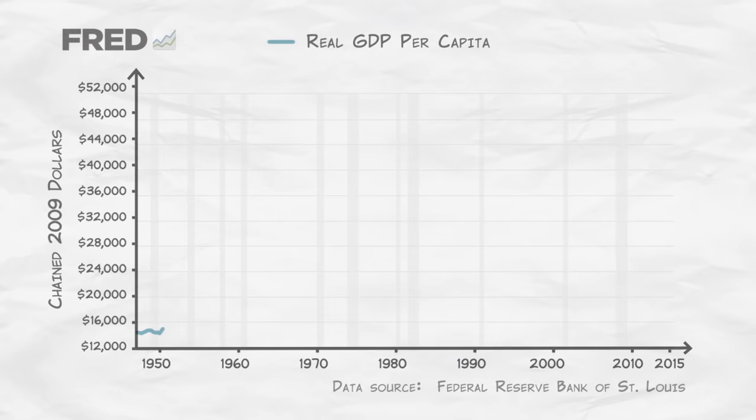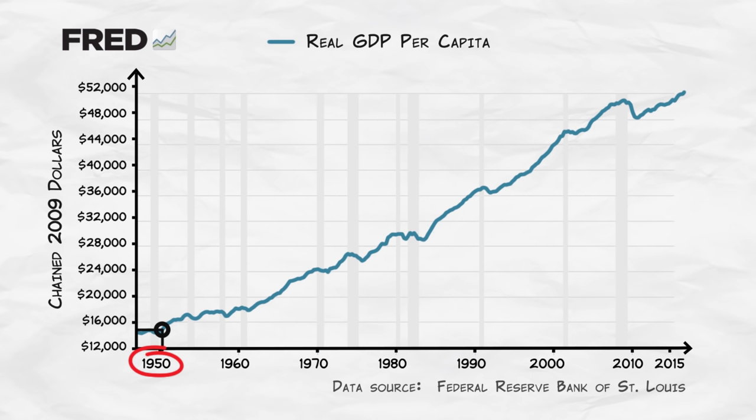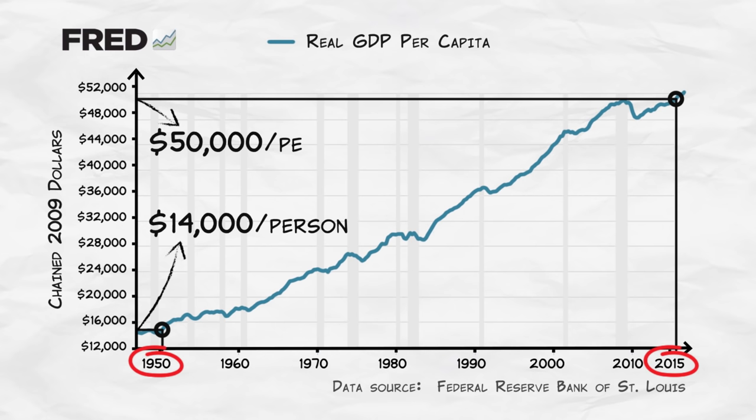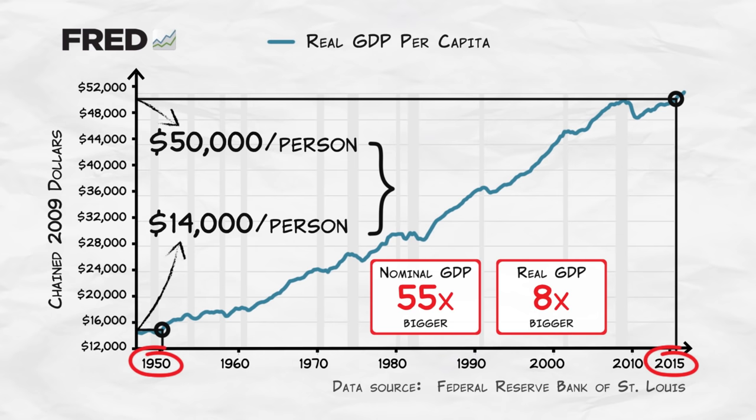Here's what we get. In 1950, real GDP per capita, measured in constant prices, was about $14,000. In 2015, real GDP per capita is about $50,000. So on average, people in 2015 have a standard of living that's four times higher than in 1950 — a pretty remarkable increase. Since real GDP increased by eight times and real GDP per capita increased by four times, we know that the population approximately doubled between 1950 and 2015.